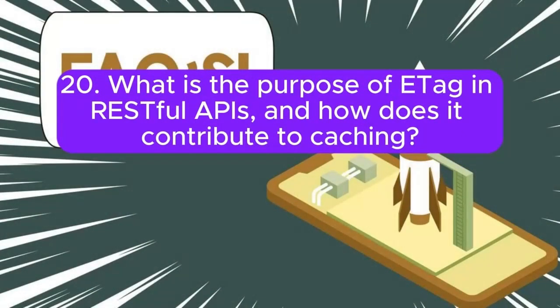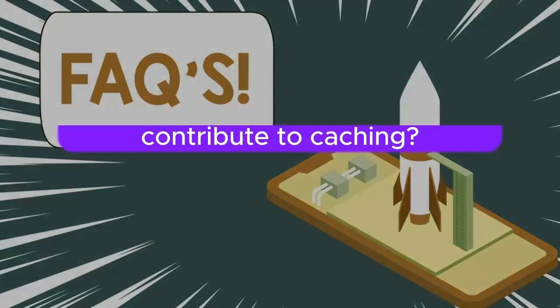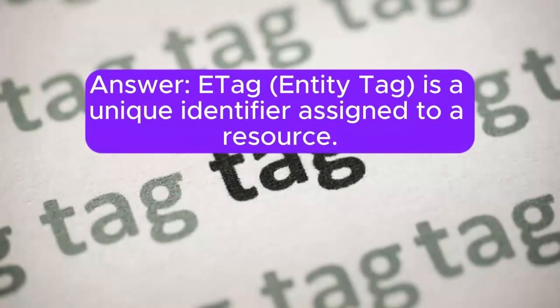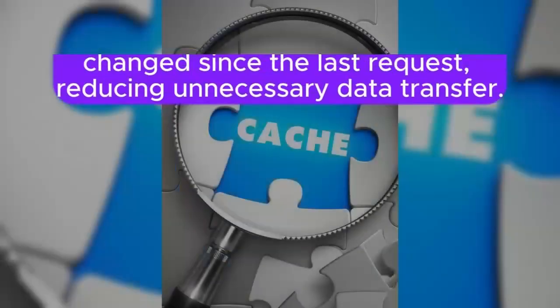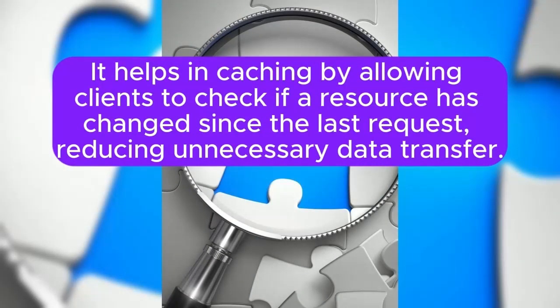Question 20: What is the purpose of ETag in RESTful APIs, and how does it contribute to caching? An ETag (Entity Tag) is a unique identifier assigned to a resource. It helps in caching by allowing clients to check if a resource has changed since the last request, reducing unnecessary data transfer.